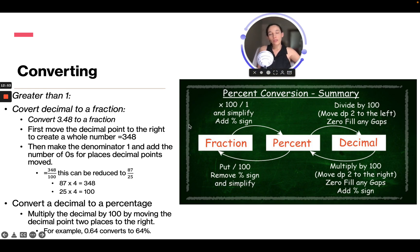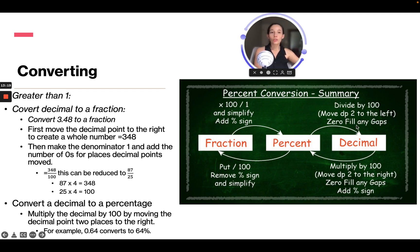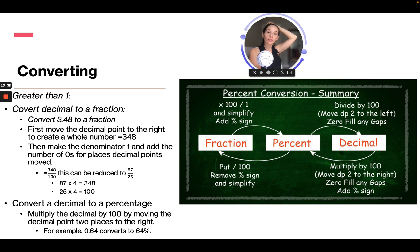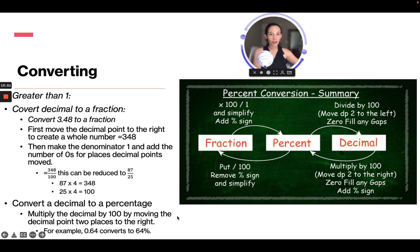Here's a percent conversion summary. If you have a percent and want to go to a fraction, put it over 100, remove the percent sign, then simplify. To go from a fraction to a percent, multiply by 100, divide by 1, simplify, and add a percentage sign. To go from a percent to a decimal, divide by 100 or move the decimal place two to the left, adding zeros to fill gaps. To go from a decimal to a percentage, multiply by 100 or move the decimal two to the right and add a percentage sign.